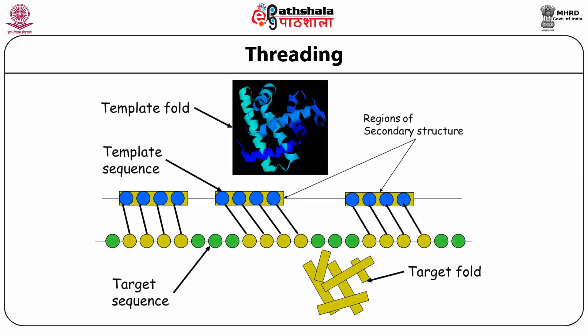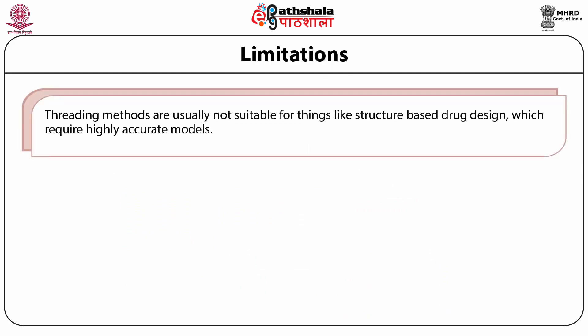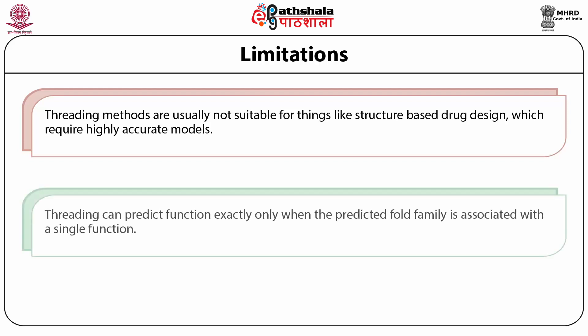In threading, you take your sequence and try to fit it into all possible protein folds. You have a threading function which checks how compatible your target sequence is with the three-dimensional structure of each protein fold being tested, and the most compatible ones are returned. Threading methods are rather crude and not very suitable for structure-based drug discovery, which requires highly accurate models. However, threading can be quite favorably used for function prediction of a protein or fold prediction. You run your sequence through each fold in a library, and the folds most compatible with your sequence are returned along with an alignment between the fold structure and the target sequence.